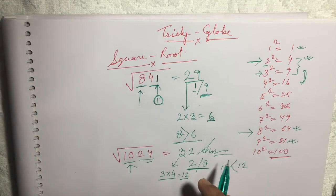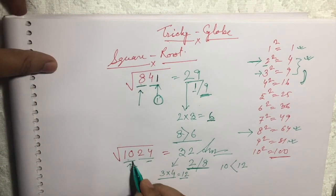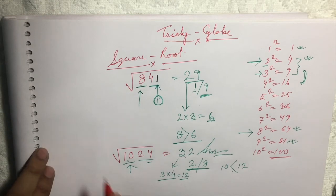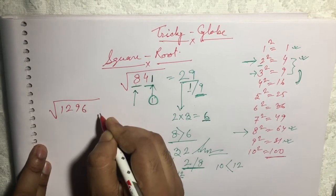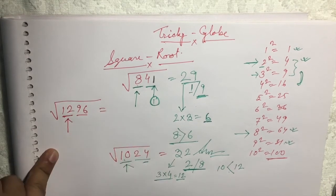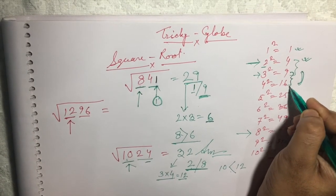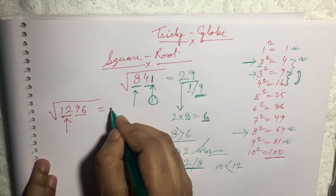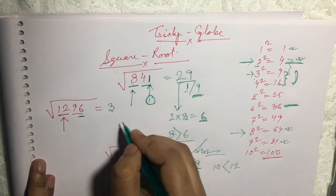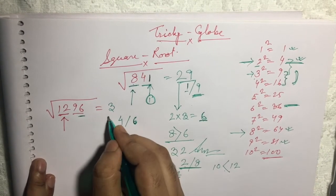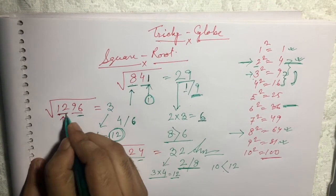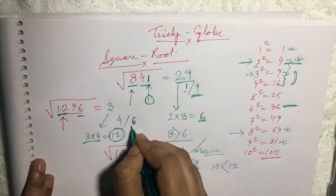Now there is a special case: what happens when the numbers are equal? Let's take the square root of 1296. We make pairs: 96 and 12. Since 12 is in between 9 and 16, the first digit is 3. For the unit digit, 6 appears in 4 squared and 6 squared, so the options are 4 or 6. Multiply 3 by the next number: 3 times 4 is 12. Since 12 equals 12 — in case of equal, we take the bigger number.